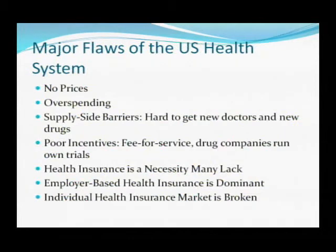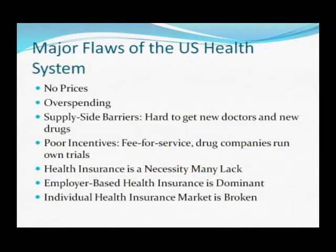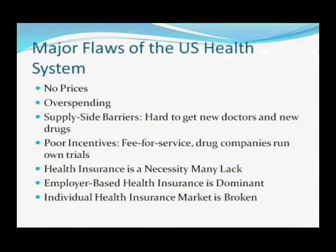Looking at the supply side of healthcare, we don't have enough doctors, we don't have good incentives for getting new drugs to market, and doctors have incentives to overuse care since they get paid more every time they do another procedure. Before the Affordable Care Act, about 18% of Americans didn't have health insurance — this is one of the big problems with the system that seems unjust and that a lot of people really want to fix.